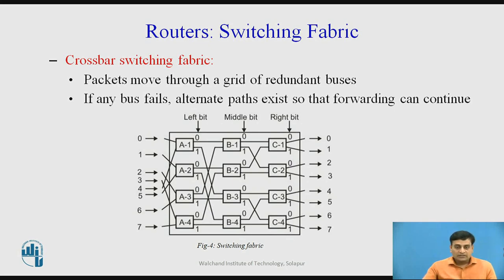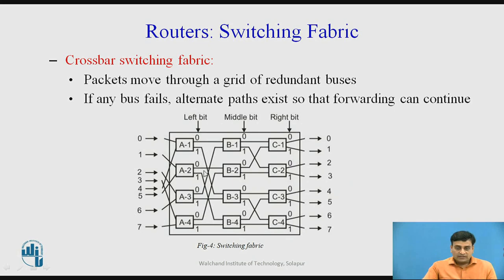In figure 4, you can see the crossbar switching fabric. It has N inputs and N outputs, and with the help of this redundant bus grid, it can forward packets efficiently.